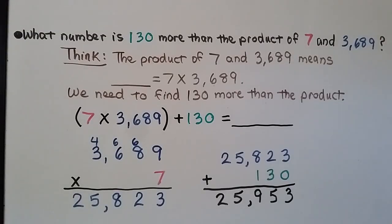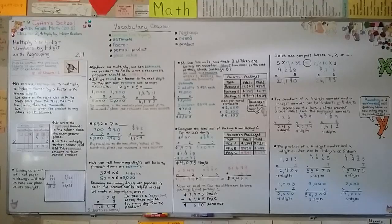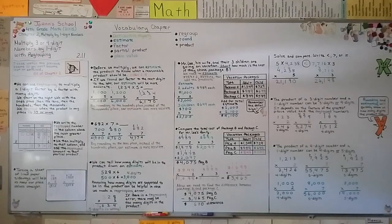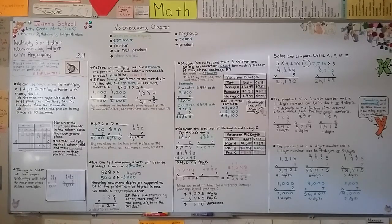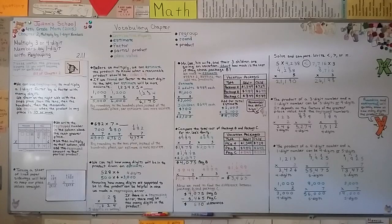That is 130 more than the product of 7 and 3,689. Remember to keep your place value straight — turn your paper sideways to help, and don't forget to add those regrouped numbers in the next column. For our next lesson, 2.12, we're going to do multi-step word problems with multiplication using equations and learn how to write those equations. Have a really nice day, and I'll see you next time!